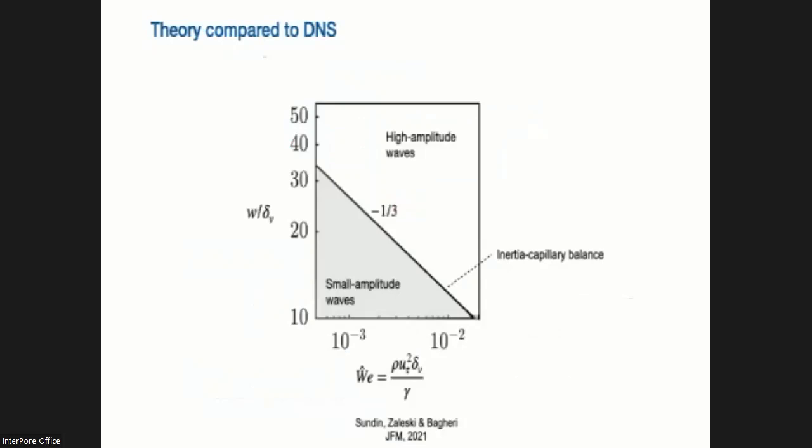So what this means is that if we plot this asymptote, if we plot this power law in width, normalized width with respect to this Weber number, we get a line and all the choices we make such that the Weber number and the width, normalized width is in the gray zone, we will have waves that don't grow that much. This is what the theory tells us, whereas in the upper right hand side, we will have high amplitude waves and drag increase. So we can make numerical simulations where we see that the drag reduction cases do fall into the small amplitude waves, whereas the high amplitude waves where drag increase simulations fall into the upper side. So the theory seems to work, especially for small widths.